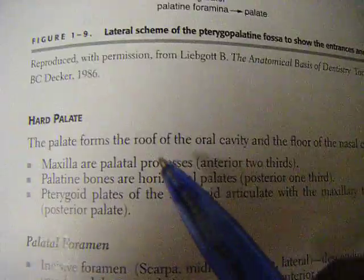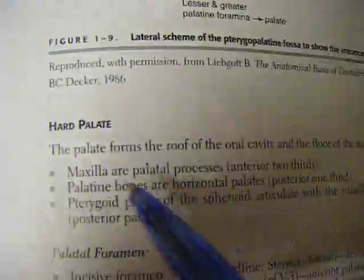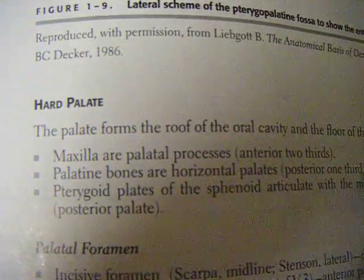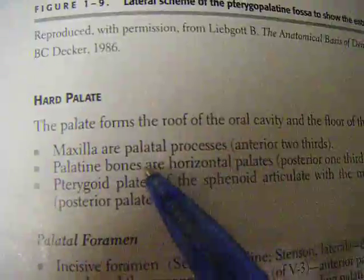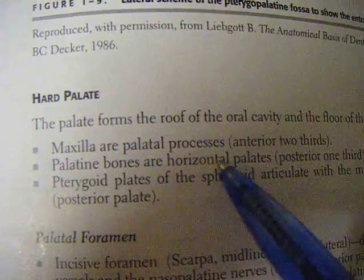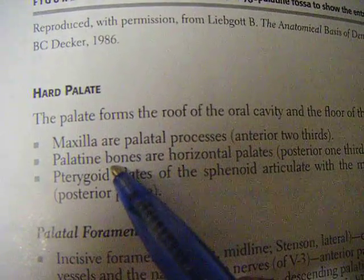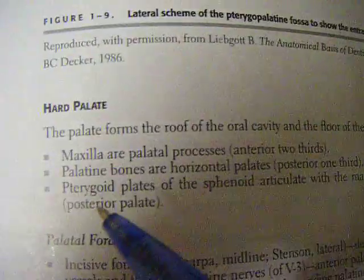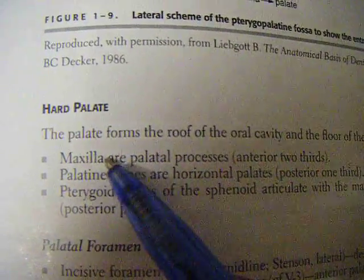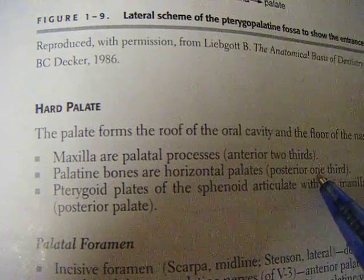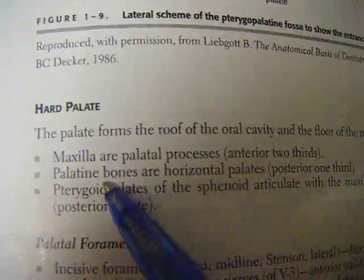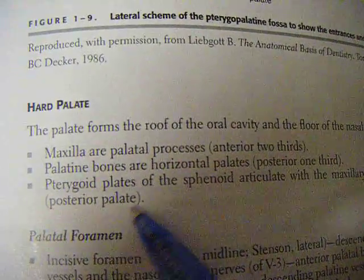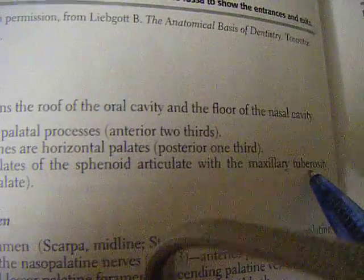The hard palate forms the roof of the oral cavity and the floor of the nasal cavity. The palatal processes of the maxilla constitute the anterior two-thirds of the hard palate, and the posterior one-third is formed by the palatine bones — specifically the horizontal plate of the palatine bone. The pterygoid plates of the sphenoid articulate with the maxillary tuberosity posteriorly.